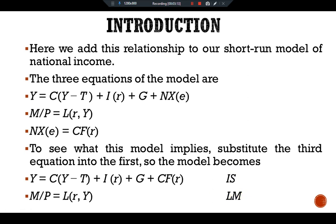These equations are much like the two equations of the closed economy IS-LM model. The only difference is that expenditure now depends on the interest rate for two reasons: as before, a higher interest rate reduces investment, but now a higher interest rate also reduces the net capital outflow and thus lowers net exports. So both investment and net capital outflow depend upon our domestic interest rate.